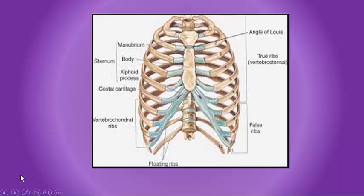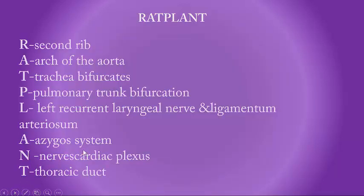Let's see the structures that pass via the plane of the sternal angle of Lewis. There is a beautiful mnemonic that will help you remember all the structures. The first letter is R for the second rib, the second is A for the arch of aorta.